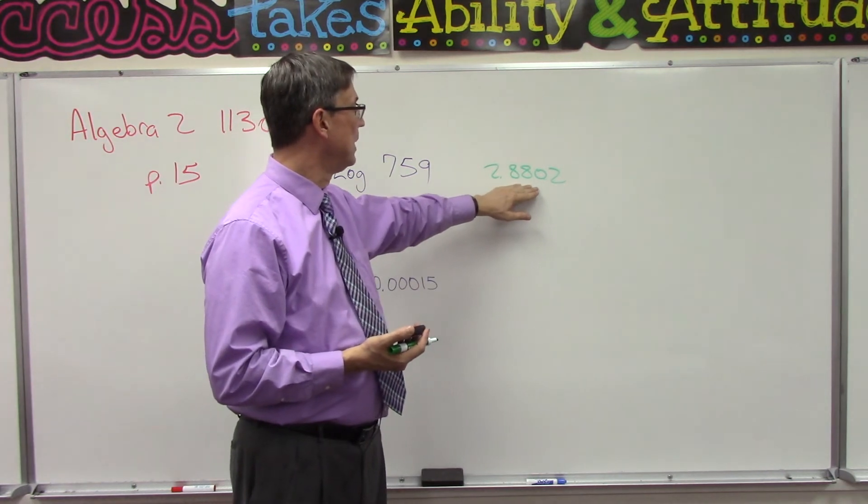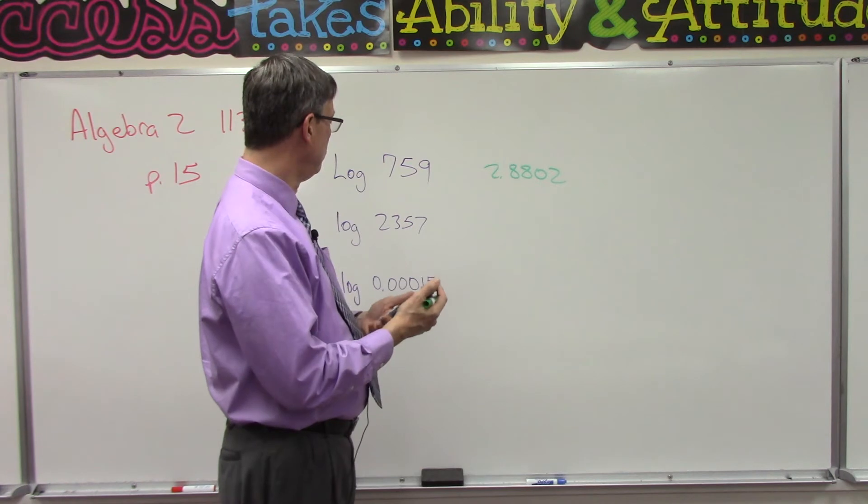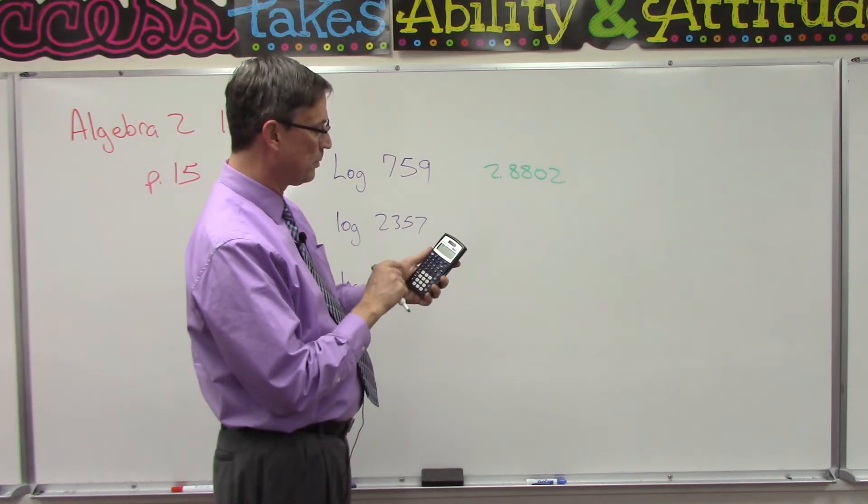You should get 2.8802 when you round that off. All right, let's try a bigger number: 2357. So I'm gonna hit clear.